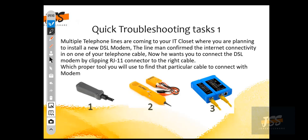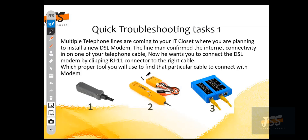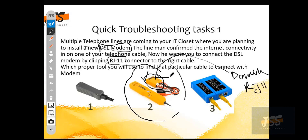Which proper tool are you going to use to identify it? A student answers: number two. Yes — the tone and probe, exactly, you are very right. You will connect one end to the demarcation point and plug an RJ11 connector — because I'm talking about a DSL modem, I'm talking about RJ11. This device has both RJ45 and RJ11 ports, so you plug one end into the RJ11.